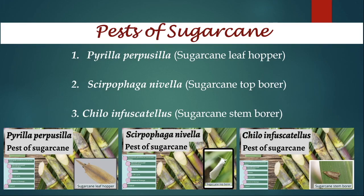Hello and welcome to my class. In this video, I am going to give you a comparative account of three pests of sugarcane: Pyrella purpusilla or sugarcane leafhopper, Scirpophaga nivella or sugarcane top borer, and Chilo infuscatellus or sugarcane stem borer. I have made individual videos for each of these pests, but here I am going to present a comparative account which will help you in remembering the pest biology more clearly, as well as help you in distinguishing one pest from another.